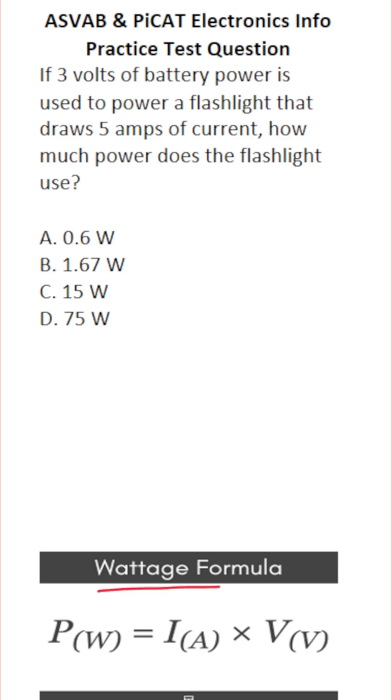So to answer this one, you have to know the wattage formula, which is very simple. It says power measured in terms of watts is equal to current, that's given in terms of amps, times voltage, which is given in terms of volts. So we're just going to plug the information that we're given into the wattage formula and solve it accordingly.